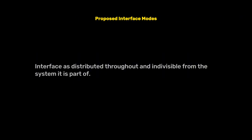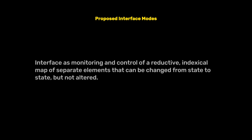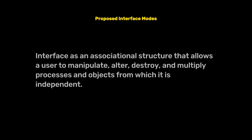First: interface as distributed throughout and indivisible from the system it is part of. Second: interface as monitoring and control of a reductive, indexical map of separate elements that can be changed from state to state, but not altered. Third: interface as an associational structure that allows a user to manipulate, alter, destroy, and multiply processes and objects from which it is independent. What does that mean?